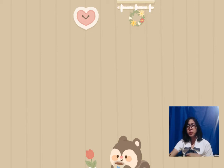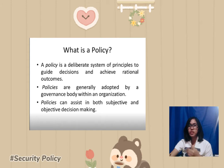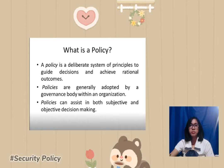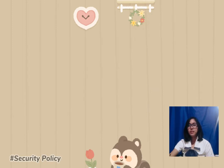Topic number three is about security policies. The speaker in the tutorial first defined what a policy is. According to him, a policy is a deliberate system of principles to guide decisions and achieve rational outcomes, generally adopted by a governance body within an organization, and can assist in both subjective and objective decision making.